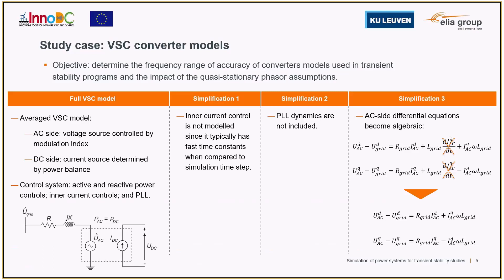The first simplification is where the inner current control is not modeled, since it tends to be a fast control and its time constants are small compared to the simulation time step. For the second simplification, the PLL dynamics is not included. And in the third simplification, the derivatives associated with the AC side differential equations are neglected, turning them into algebraic equations.